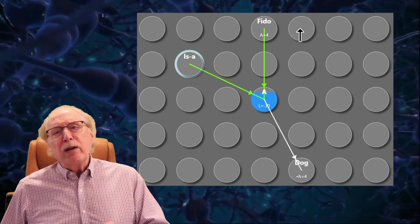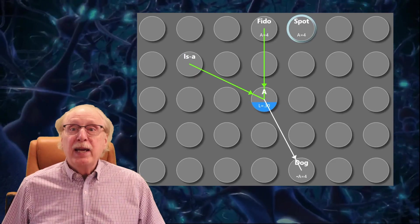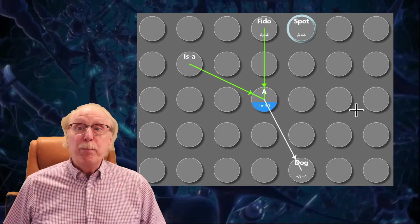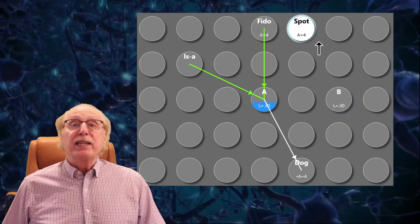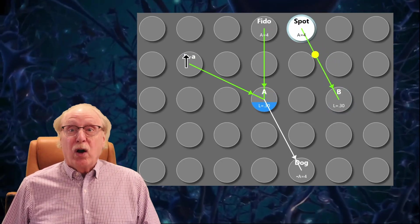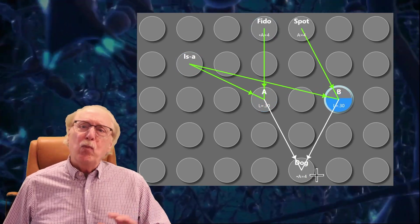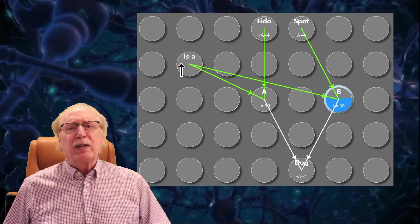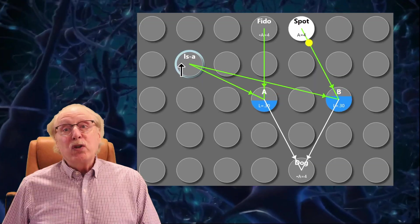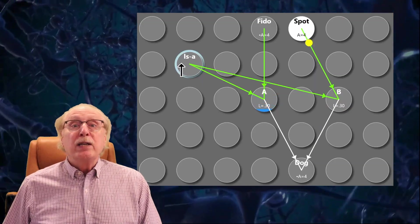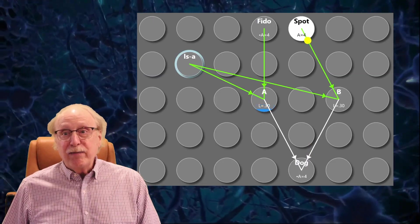If you now hear that Spot is a dog, we can add a neuron representing Spot and another neuron labeled B and make similar connections so that if Spot and Iza are firing, dog will fire as well. You can see that we could add more dogs and more intermediate neurons indefinitely. We have billions of neurons available. We could also use identical circuitry to represent that dog is an animal, and an animal is a living thing, etc.